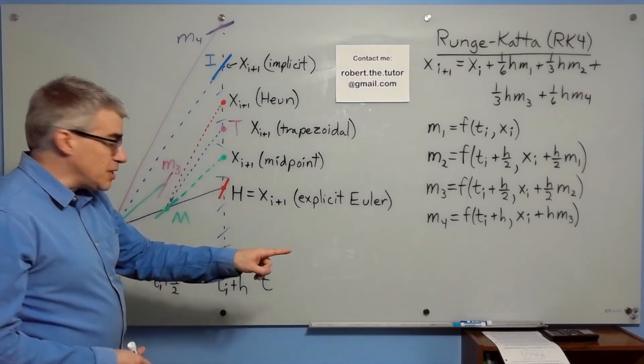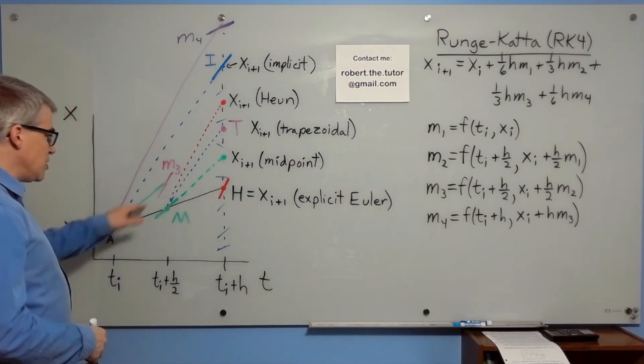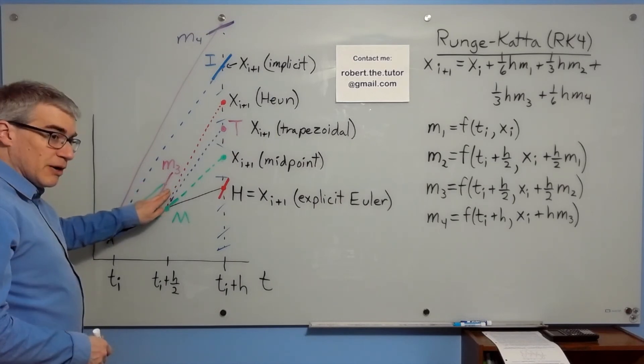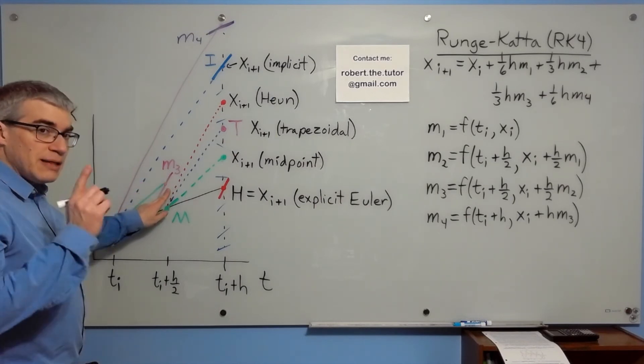To get the third slope, you go back to the beginning, use the slope at m, go up halfway, and that's the point there. You find that slope, and that is m3.